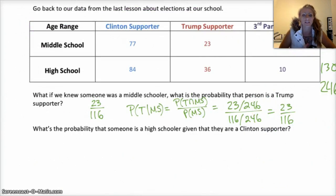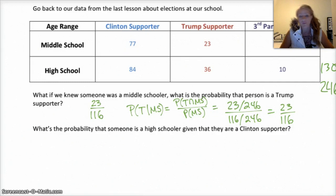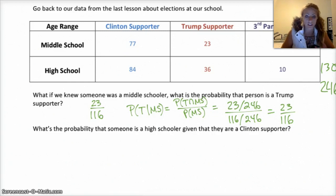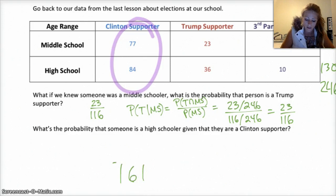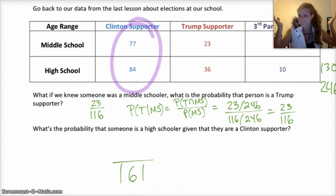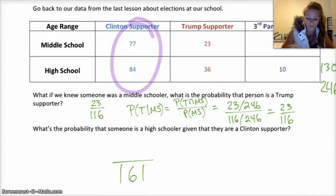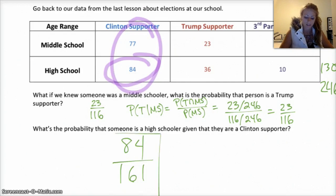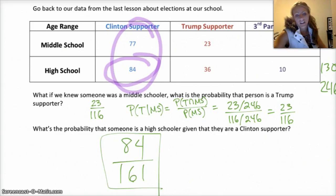Try the next question: what's the probability that someone is a high schooler, given they're a Clinton supporter? I randomly select a person and tell you, hey, they're a Clinton supporter. What's the probability that that person happens to be a high schooler? Given that they're a Clinton supporter, you're dividing by the total number of Clinton supporters, which is 161 — that's my denominator. If I have a two-way table, I like to do it with my brain because it makes more sense to me than the formula. Out of the 161 Clinton supporters, there are 84 that are high schoolers, so the answer is 84 out of 161.